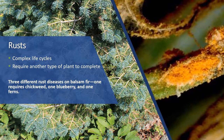Rusts are a second category of diseases. Most rusts have complex life cycles that require another type of plant to complete. For example, there are three different rust diseases on balsam fir — one requires chickweed, one blueberry, and one fern as alternate hosts. Like needle casts, rust diseases rarely kill trees, but they tend to make them less visually appealing, so they are a concern to growers. As with needle casts, having a positive diagnosis made in the lab is a good first step.